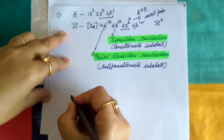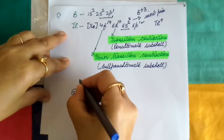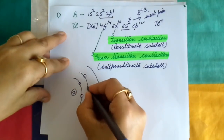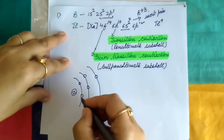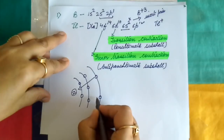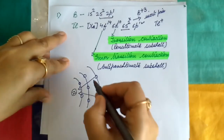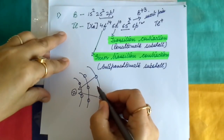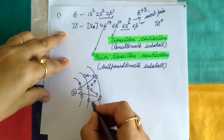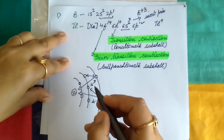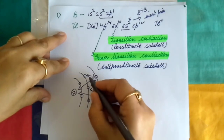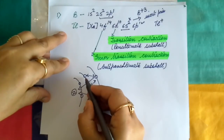The screening effect can be understood as follows. Suppose we have a nucleus with charge Z+ and electrons revolving around it in shells. The nucleus, being positively charged, attracts electrons toward itself. However, electrons present in the inner shells are also negatively charged and repel the outer electrons. The inner electrons protect the outer electrons from the nucleus because they oppose the effect of the nucleus.